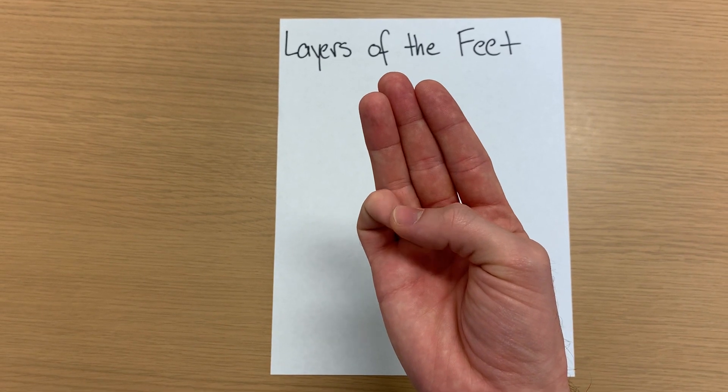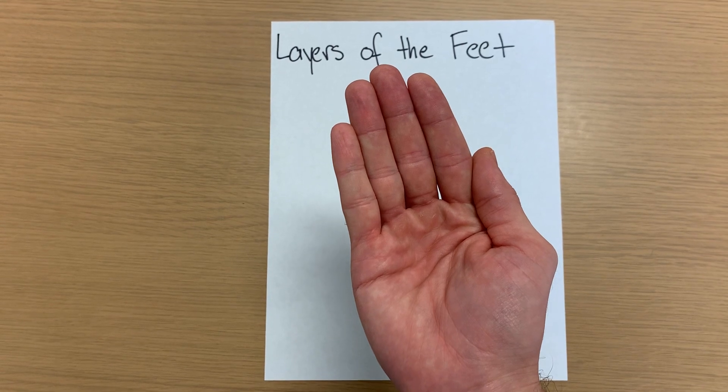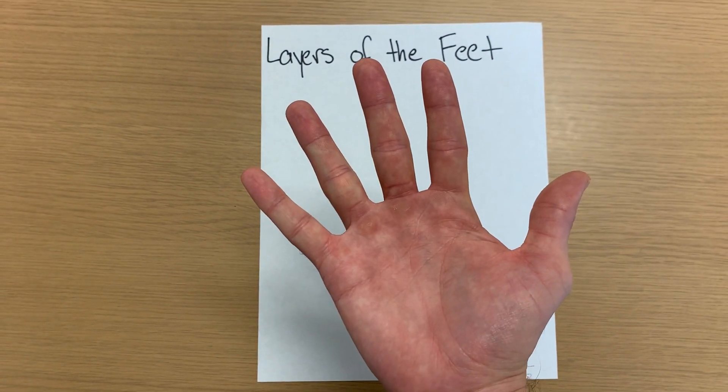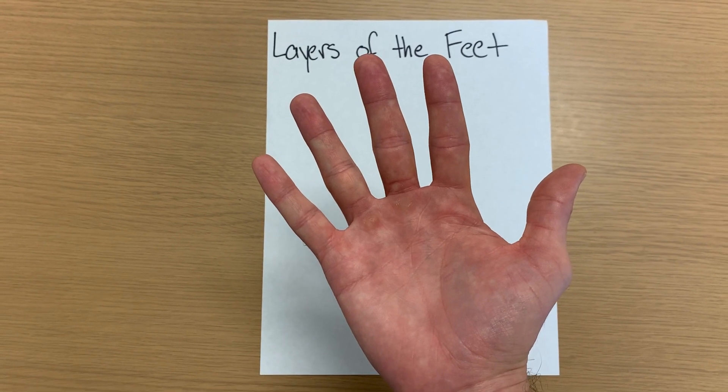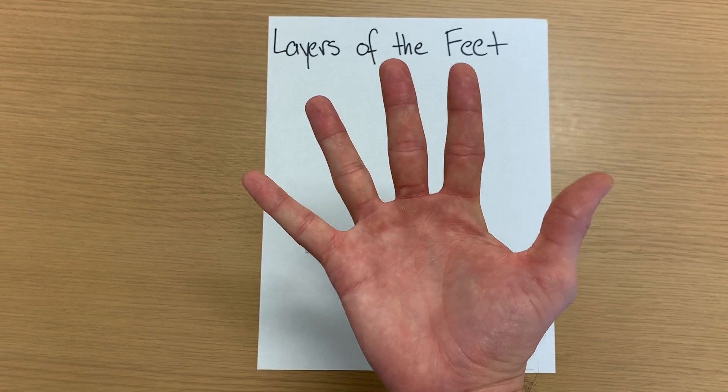And then for our fourth and final muscle layer, we have our pads and our dabs. For our dab, it's dorsal interossei and those abduct, so dab. And then for our plantar interossei, those adduct, so pad. Dab and pad.